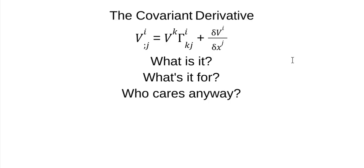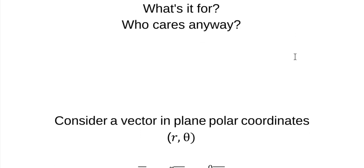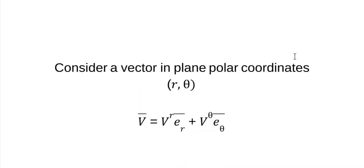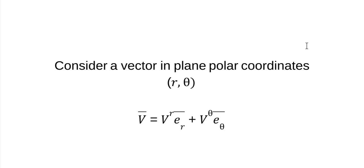Let's take a look at this thing. Let's talk about a vector in plain polar coordinates. Now, to use the covariant derivative, we need to have something where the basis vectors are changing in the space, and that would be curvilinear coordinates.